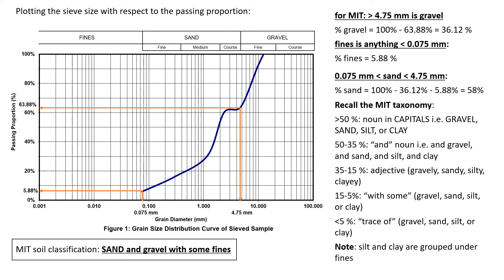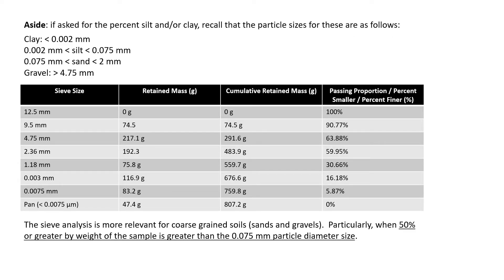This pretty much wraps up the MIT classification. Let's move on to the USCS. Before that, I want to clarify that in this particular example, it's obvious that the soil sample is a coarse-grained soil, meaning more than 50% of the sample was greater than 0.075 millimeters.